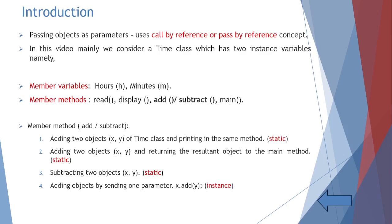Passing objects as parameters uses call by reference, or pass by reference, which I explained in the previous video. In this video, we mainly consider a Time class which has two instance variables — hours and minutes — and four member methods: read, display, add or subtract, and main method.